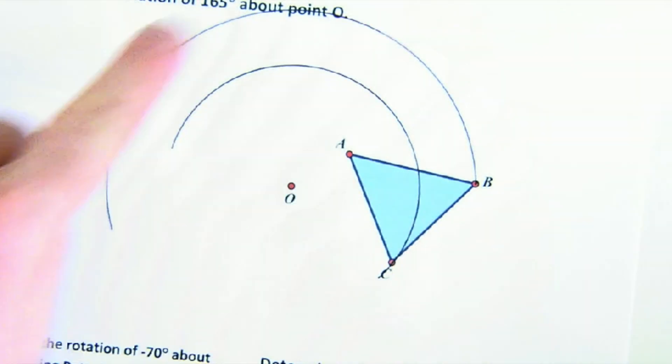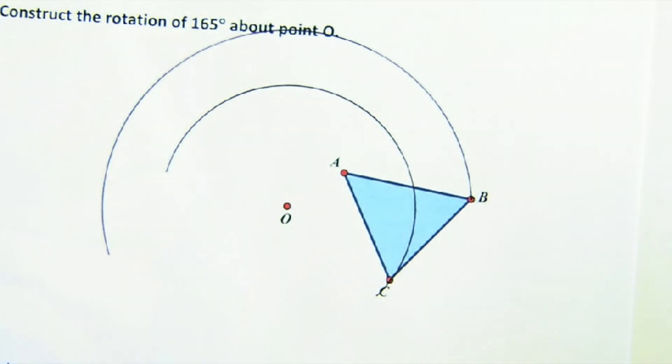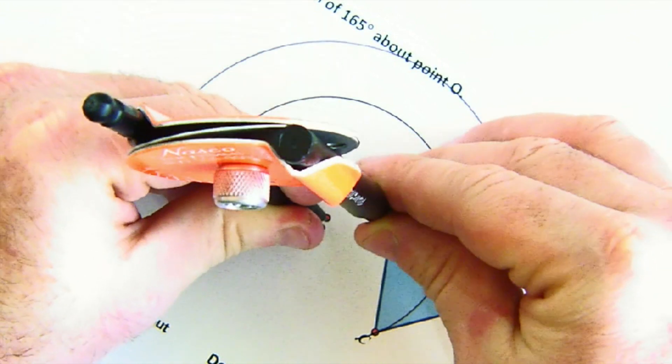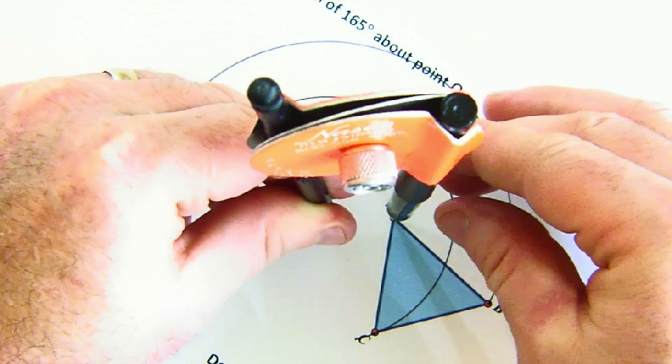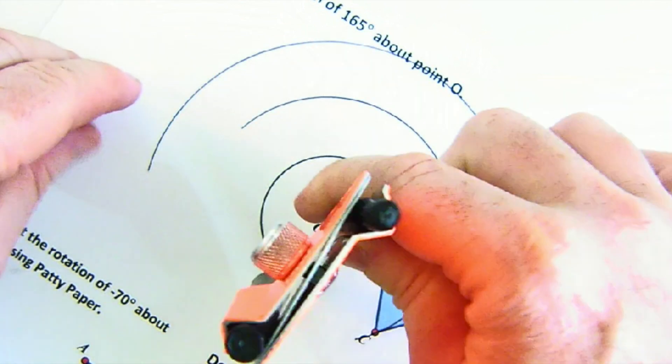Now I only go about halfway around because I'm only going 165. So I only need about a 180-degree arc there to work with. And then A, I'm going to put my mark point on O and on A, and again create about a 180-degree arc.